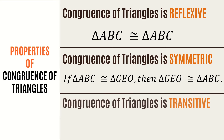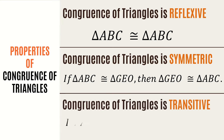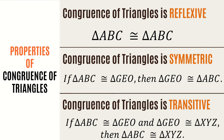The third property is congruence of triangles is transitive: if triangle ABC is congruent to triangle GEO, and triangle GEO is congruent to triangle XYZ, then triangle ABC is congruent to triangle XYZ. To prove two segments or two angles are congruent, we must show that they are corresponding parts of congruent triangles. We have the CPCTC, or the corresponding parts of congruent triangles are congruent. For triangle congruence, we have the SSS congruence, the SAS congruence, the ASA congruence, and the SAA congruence.